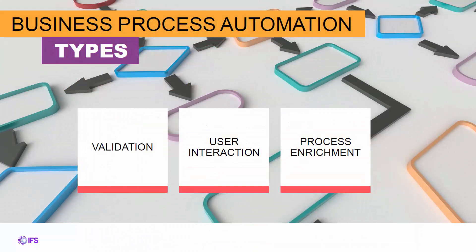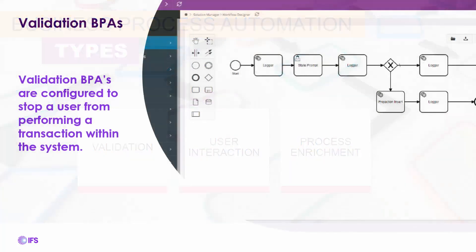Now we'll dig into a little more detail on the three types of BPAs in IFS: validation, user interaction, and process enrichment. Validation BPAs are configured to stop a user from performing a transaction in the system. The BPA can populate an error or informational message to the user, and that message can be localized for the user's language. Users are alerted to stop the transaction from occurring, and this can be done without any custom development.